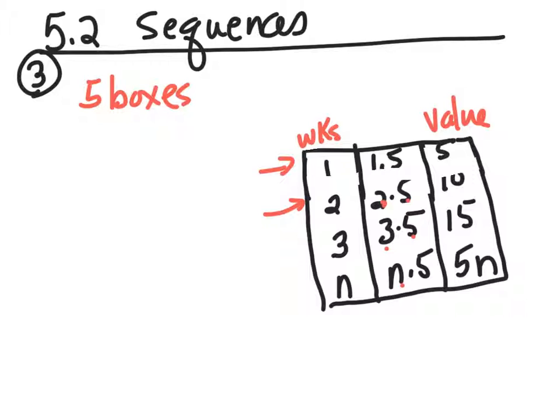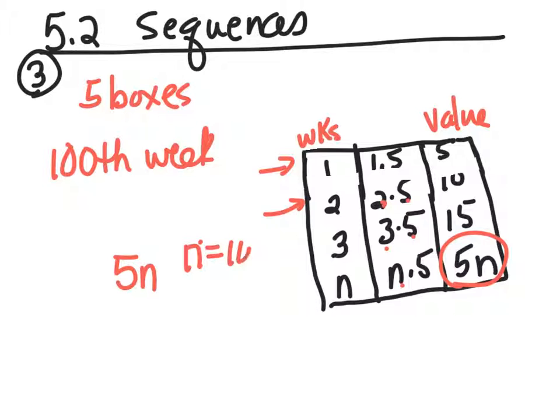So it would be five n. So the question is, on the hundredth week. So if this is the pattern, so five n, n meaning the number of weeks, let's look at that. Instead of n here, we're going to substitute, because n equals 100. So it would be five times 100. At the end of the hundredth week, there would be 500 boxes sold.